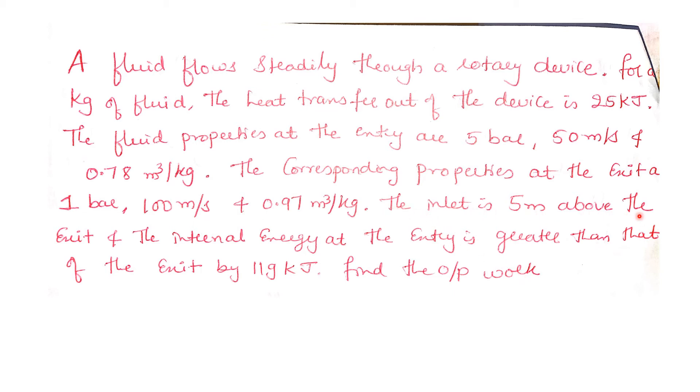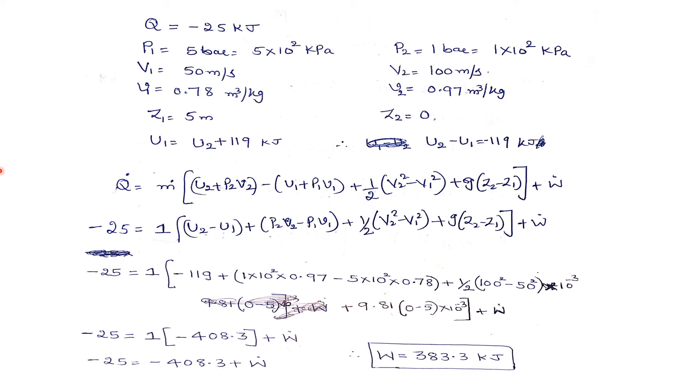The inlet is 5 meters above the exit, that means Z1 is 5 meters greater than Z2. Similarly, internal energy at the entry is greater than that of the exit, so U1 equals U2 plus 119. Z1 equals Z2 plus 5.